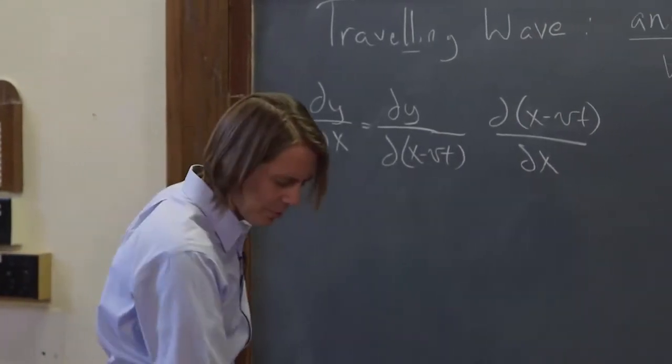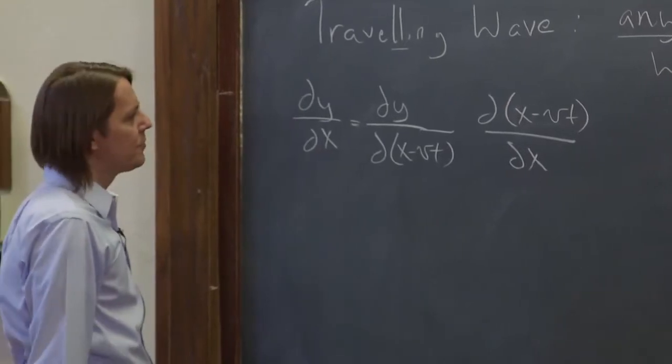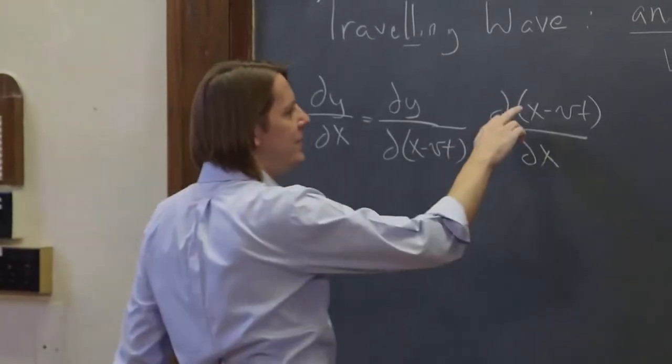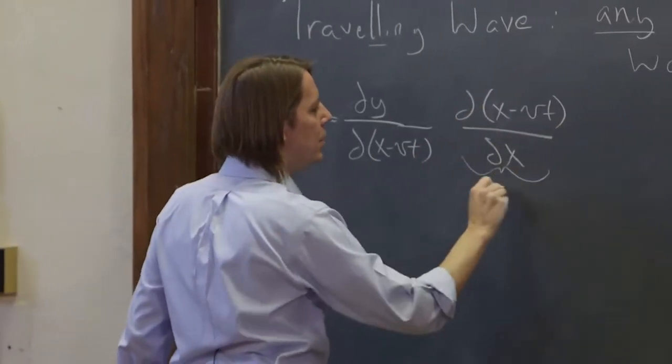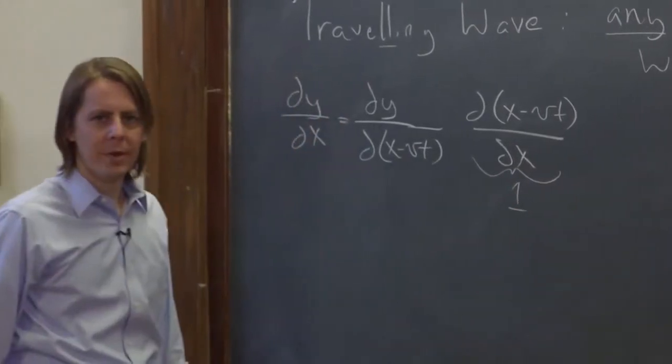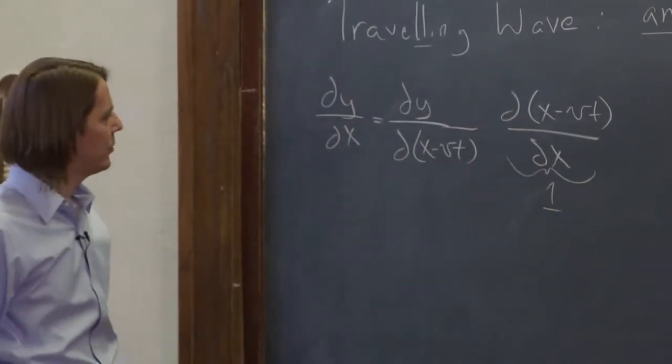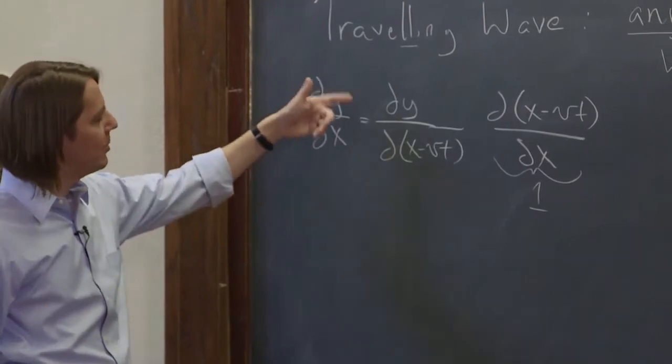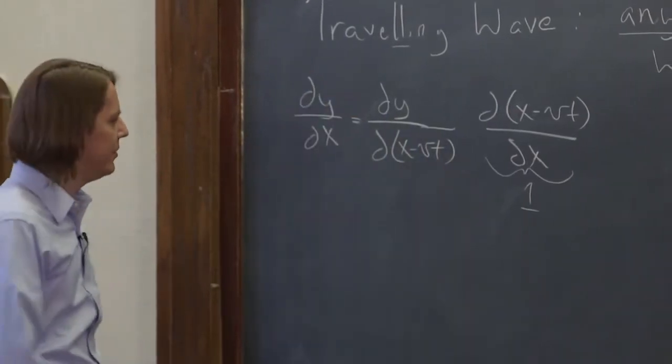It's not really quite that simple. This is just a true property of partial derivatives. We don't want to get into proving it and all that stuff, because this is not a math class. But if you look at it, you realize d(x-vt)/dx is 1. This just means the partial of that little function with respect to x, so it's 1. So dy/dx is the same as dy/d(x-vt).